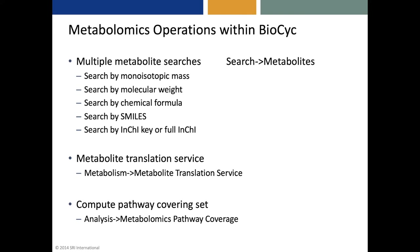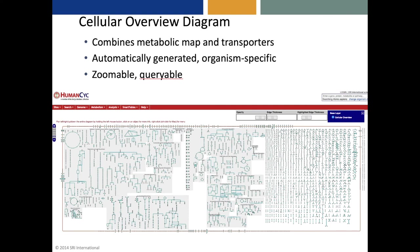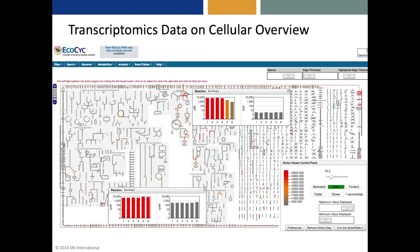There's also an ability to compute pathway covering sets for a set of metabolites. The cellular overview diagram — here in its human version — combines the metabolic map and transporters. It's automatically generated for every organism and is organism-specific. It's also zoomable and queryable. Here we've painted a transcriptomics dataset onto the cellular overview so that the reaction edges are colored to reflect the transcript levels for those genes. If the user clicks on a given reaction, a pop-up identifies the reaction and enzyme, and you can then get a graph showing transcript levels at different time points. You can also run this tool in an animated mode where the highlighted edges change with every time point, and you can start, stop, and change the speed.